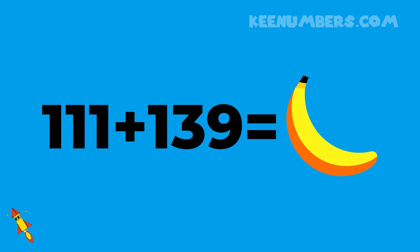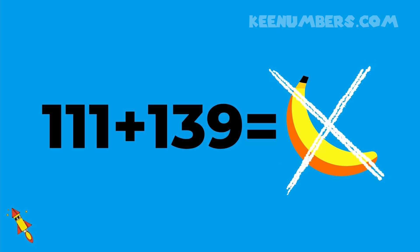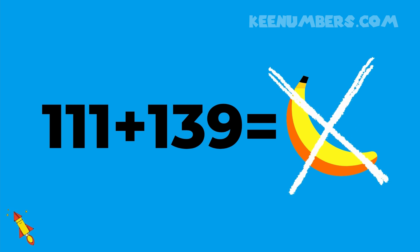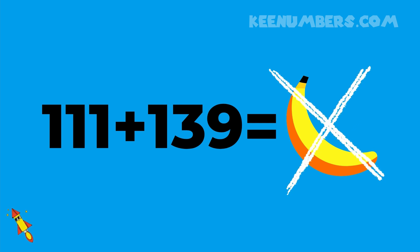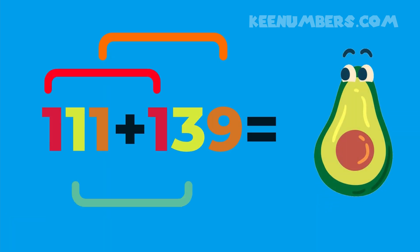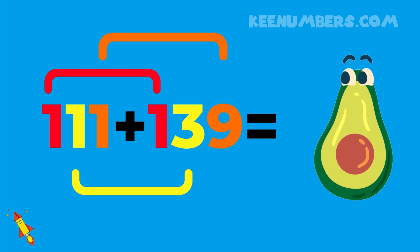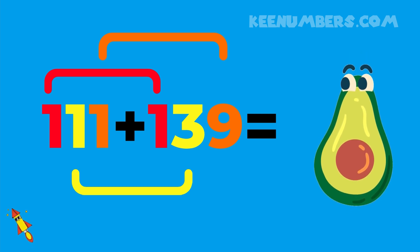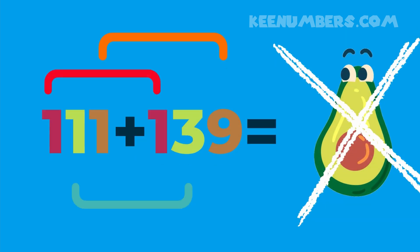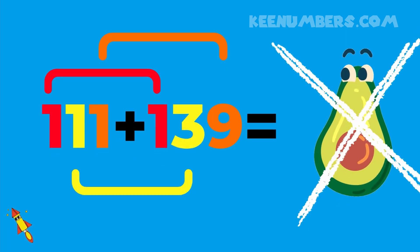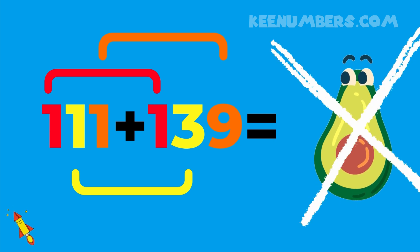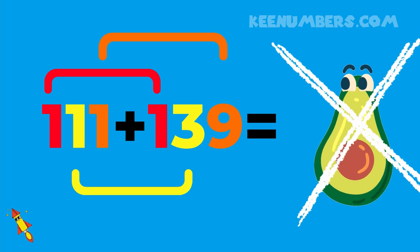Now, 111 plus 139 is equal to... wait a second. That's not equal to a banana. Where'd that even come from? 111 plus 139 is not equal to a banana, but we're going to get to the bottom of this. We're going to compare the 100 and the 100, because those are hundreds. Just like we're going to compare the 10 and the 30, because those are multiples of 10. And then we'll compare the 1 and the 9. That 111 plus 139 is equal to something, but it's not an avocado. We'll come back to this problem.